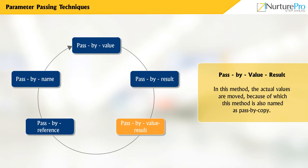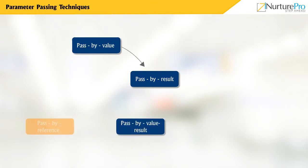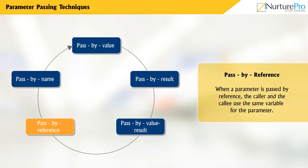When the sub-program terminates, the formal parameter value is transferred back to the actual parameter again. This in-out mode method is used in ADA for its scalar parameters. Pass by reference: When a parameter is passed by reference, the caller and the callee use the same variable for the parameter. If the callee modifies the parameter variable, the effect is visible to the caller's variable.